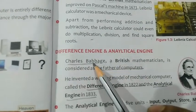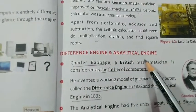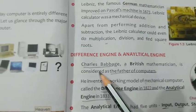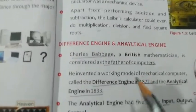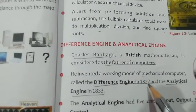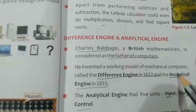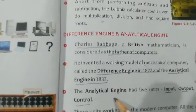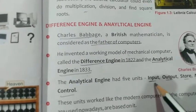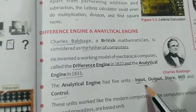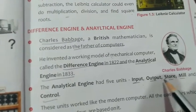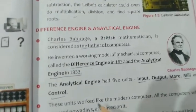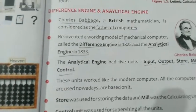The next important machine is the difference engine or analytical engine, developed by Charles Babbage, who is also known as the father of computers. The difference engine was developed in 1822 and the analytical engine in 1833. The analytical engine has five units: input, output, store, mill, and control, each with its own function.